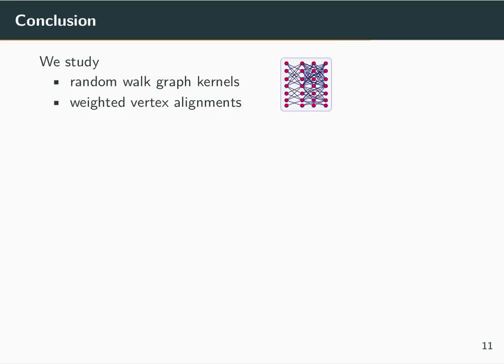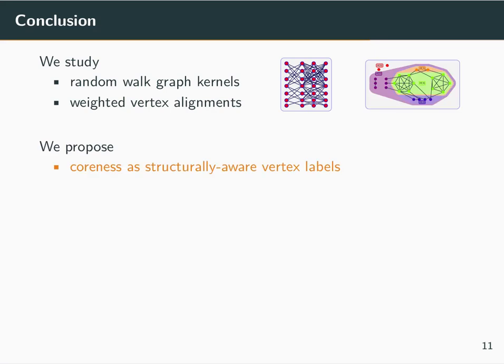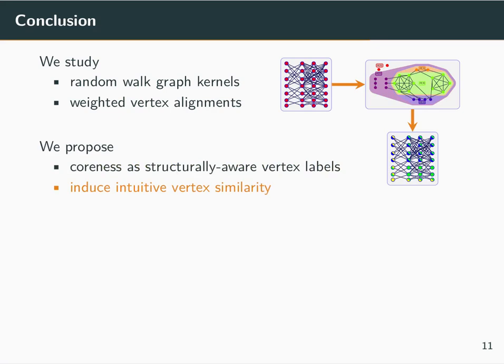To conclude, we study random walk graph kernels, each taking into consideration the weighted vertex alignment. We propose to use coreness as a structurally aware vertex label, and using this we show that an intuitive vertex similarity is introduced on the alignments of the direct product graph.